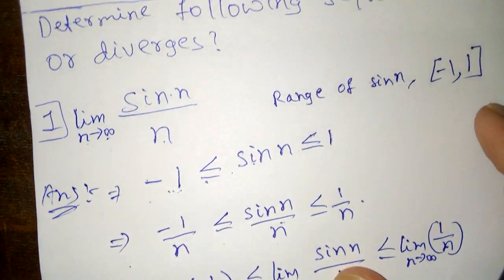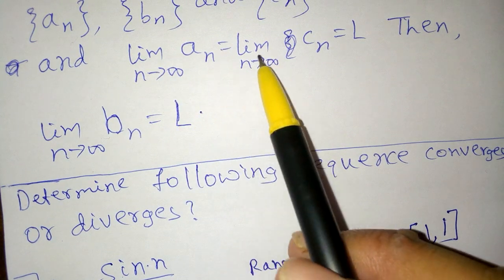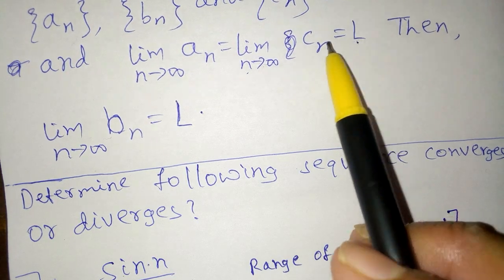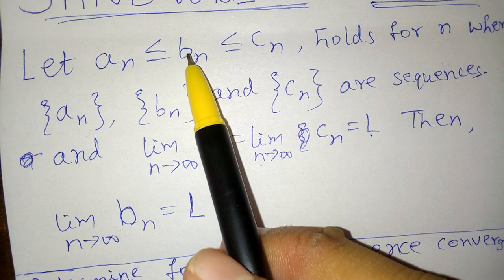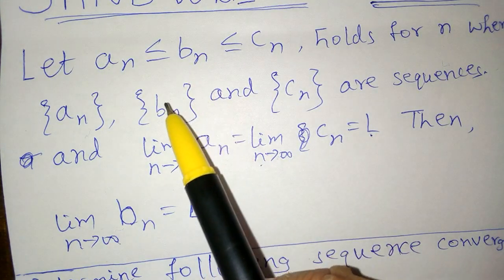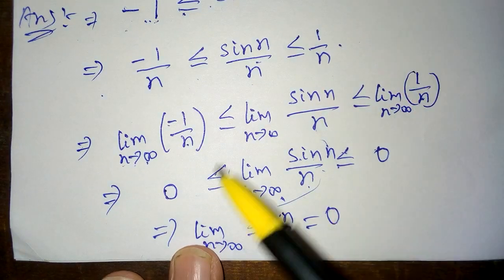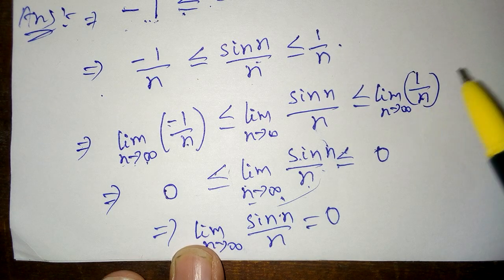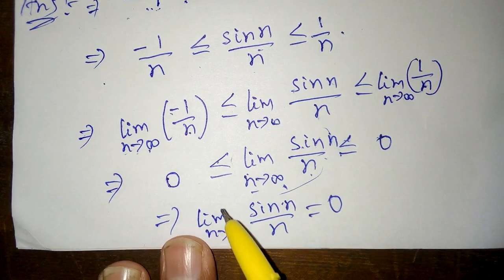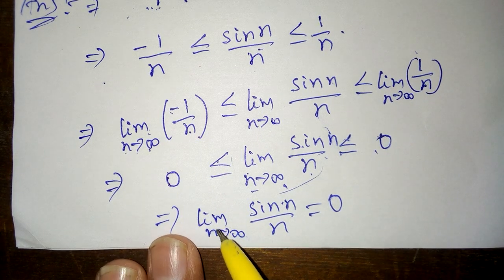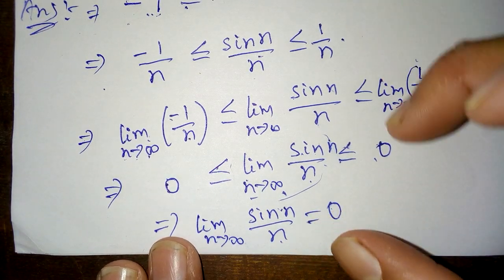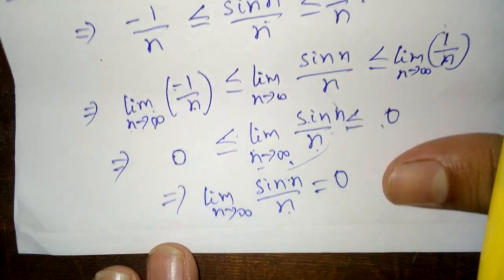To recap: the Sandwich Theorem says if the limit of a_n and the limit of c_n both equal L, then the limit of b_n is also equal to L. Here, a_n = −1/n, c_n = 1/n, and b_n = sin n / n. Since both outer limits equal 0, the limit of sin n / n also becomes 0 by the Sandwich Theorem.